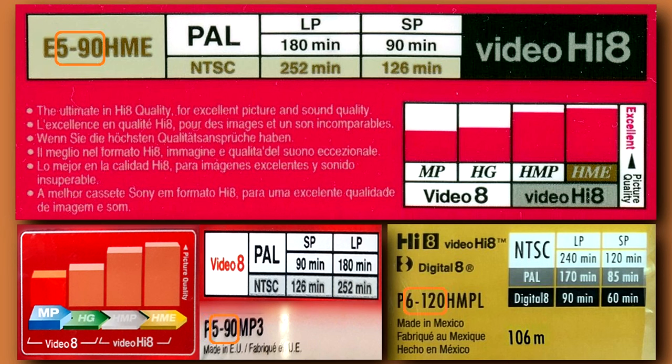Two numbers separated by a dash indicate recording time when a particular television system is used. 5 stands for the 50 Hz television system, colloquially known as PAL. 6 stands for the 60 Hz television system, known as NTSC.